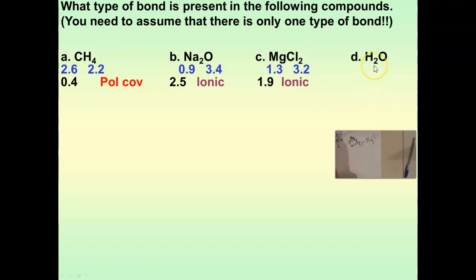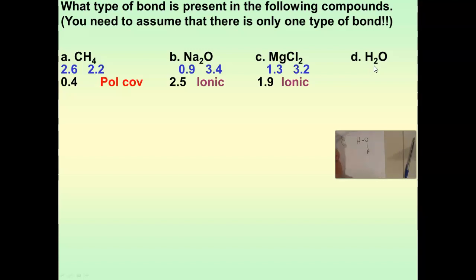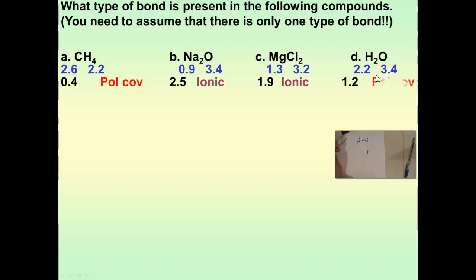And the last one, water — there's only one type of bond: oxygen to hydrogen. Taking one oxygen and one hydrogen and subtracting their electronegativities, that ends up being a polar covalent bond.